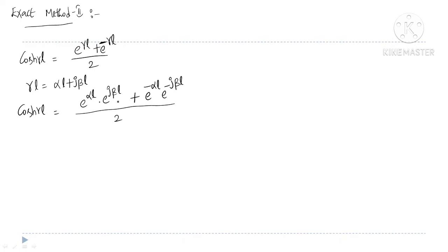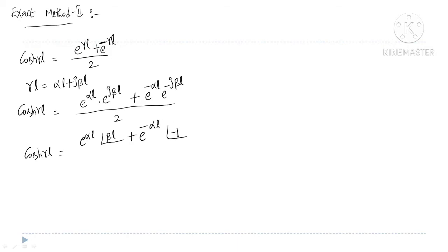Now, e^(jθ) can be expressed as angle θ, because e^(jθ) can be written as cos θ plus j sin θ, which is nothing but ∠θ. Hence, e^(jβl) can be considered as ∠βl. Therefore, cosh(γl) equals the summation of e^(αl) ∠βl and e^(-αl) ∠(-βl), divided by 2.